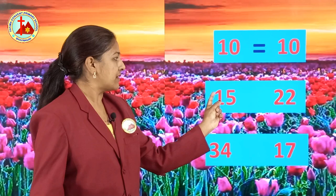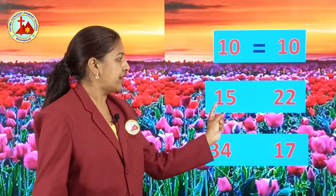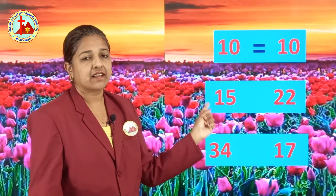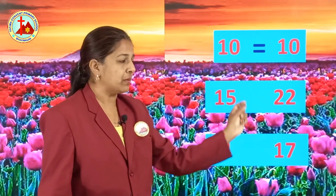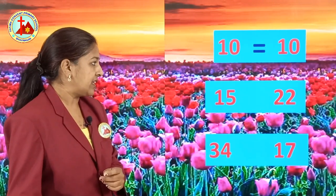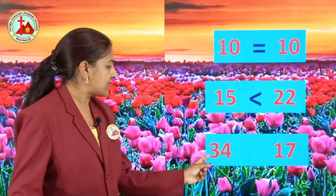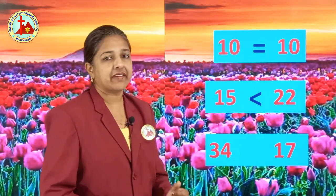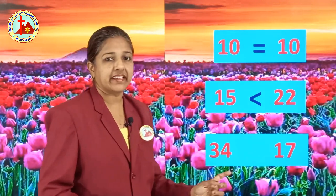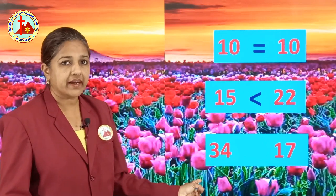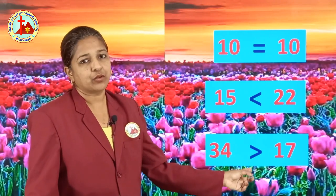Next is number 15 and number 22. Here 15 is lesser than 22. 22 is the greater number, so here greater than sign will come. Next, 34 and 17. Here 34 is greater than 17. 34 is the bigger, greater number. So this sign you have to put.